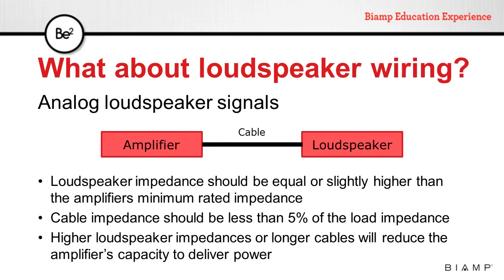For loudspeaker signals, the impedance ratio is a little bit different. Since we need to move the heavy voice coil, loudspeaker impedance should be equal to or slightly higher than the amplifier's minimum rated impedance, because we need maximum power transfer between the amplifier and the loudspeaker. When calculating connections between amplifier and loudspeakers, we need to consider the cable impedance. As a rule of thumb, the cable impedance should be less than 5% of the load impedance, to minimize losses on that cable. Higher loudspeaker impedances or longer cables will reduce the amplifier's capacity to deliver power.